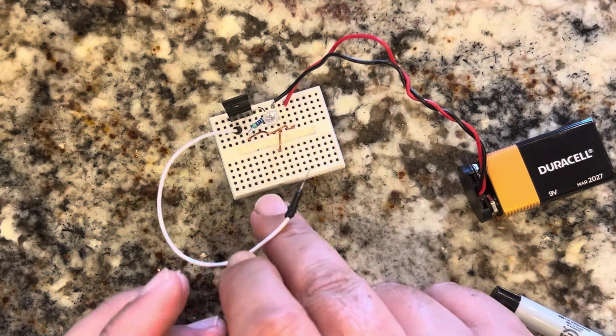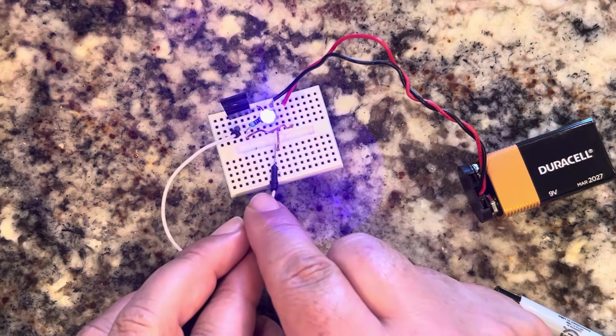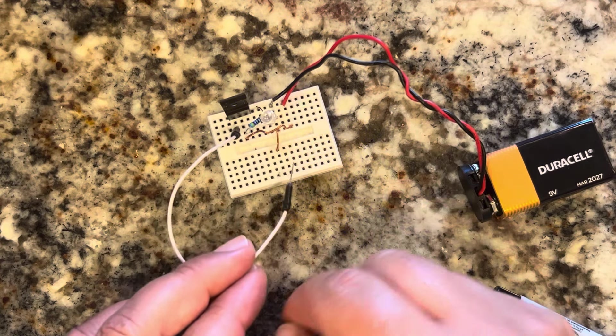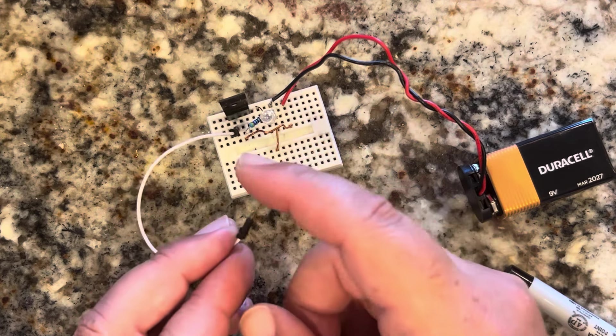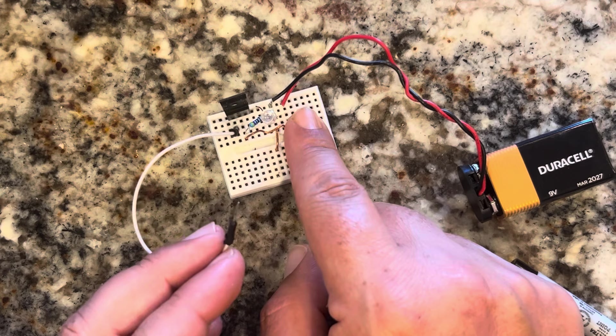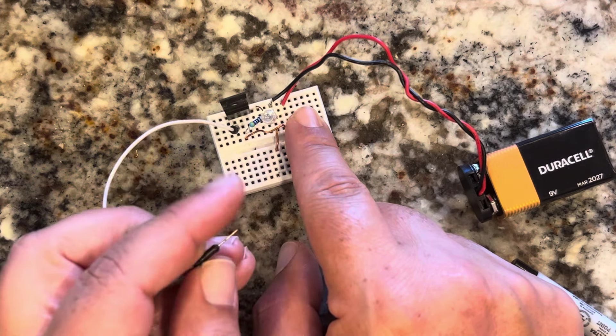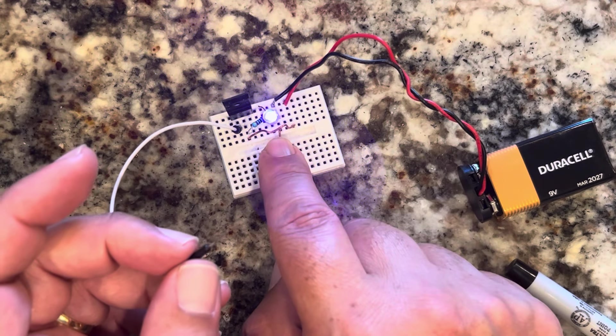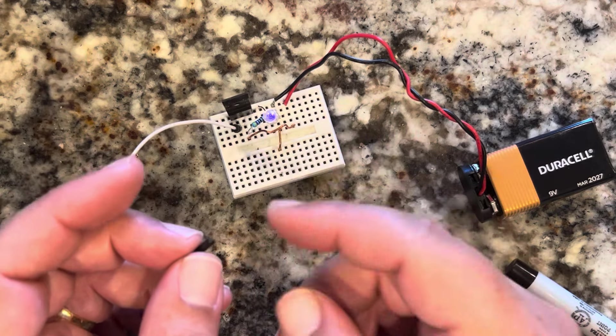It's because it's capacitatively charged. And so it won't turn off again until I touch it to the ground, which is this wire here. So if I touch it to the ground again, boom. In this way, if I turn it on, it works. Touch it to the ground, on, ground.